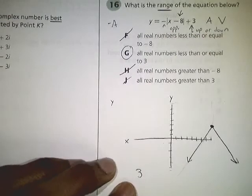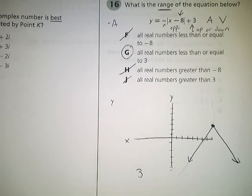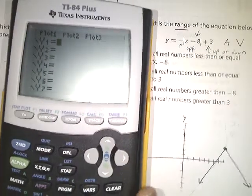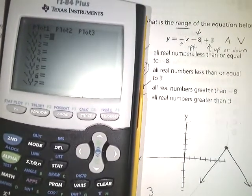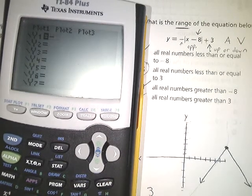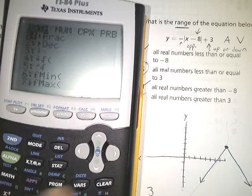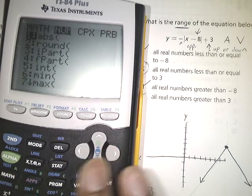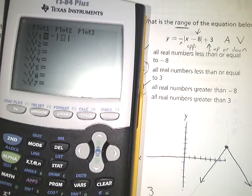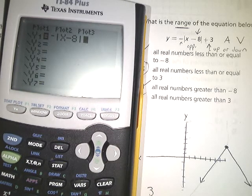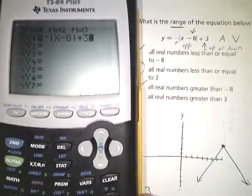Another way that you could do this problem is you can use your calculator to help you and you can plug these directly in. If you go to Y equals and you plug in negative or a minus sign, and then go to absolute value, so press MATH, slide over to number ABS, it'll put in your absolute value bar. So you can plug in exactly what you see: x minus 8, go outside your absolute value and put in plus 3.